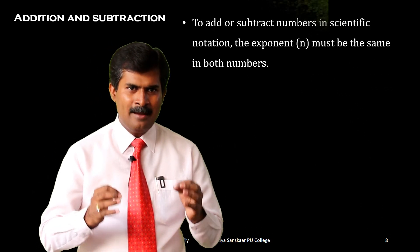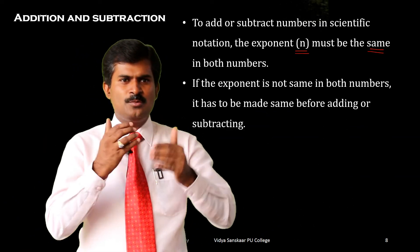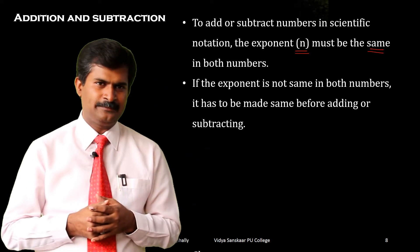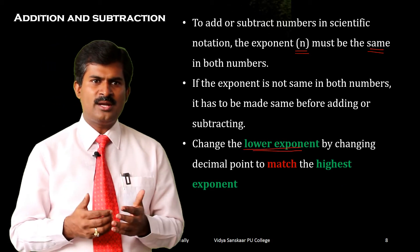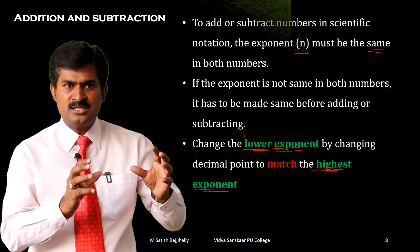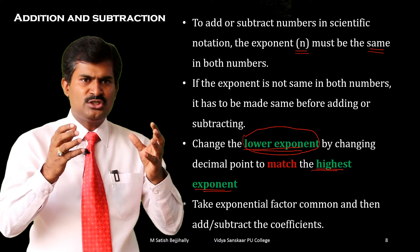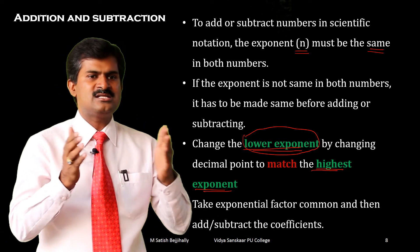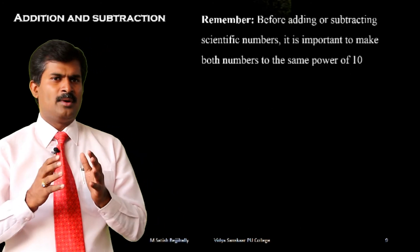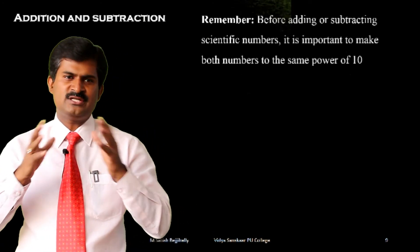Now, for addition and subtraction: to add or subtract numbers in scientific notation, the exponents n must be the same in both numbers. If the exponents are not the same, they must be made equal before adding or subtracting. Change the lower exponent by moving the decimal point to match the highest exponent. Then take the exponential factor as common and add or subtract the coefficients. It is important to make both numbers to the same power of 10 before adding or subtracting.